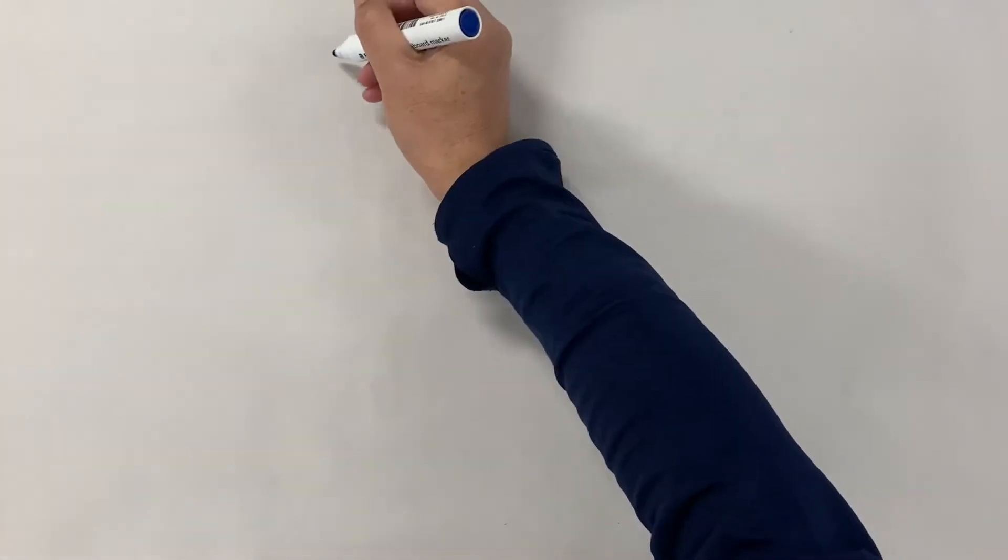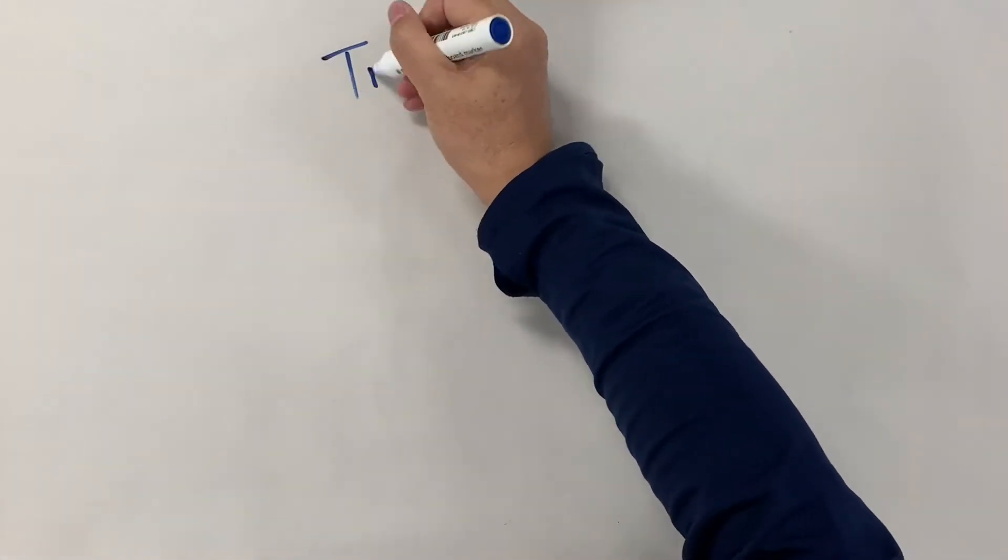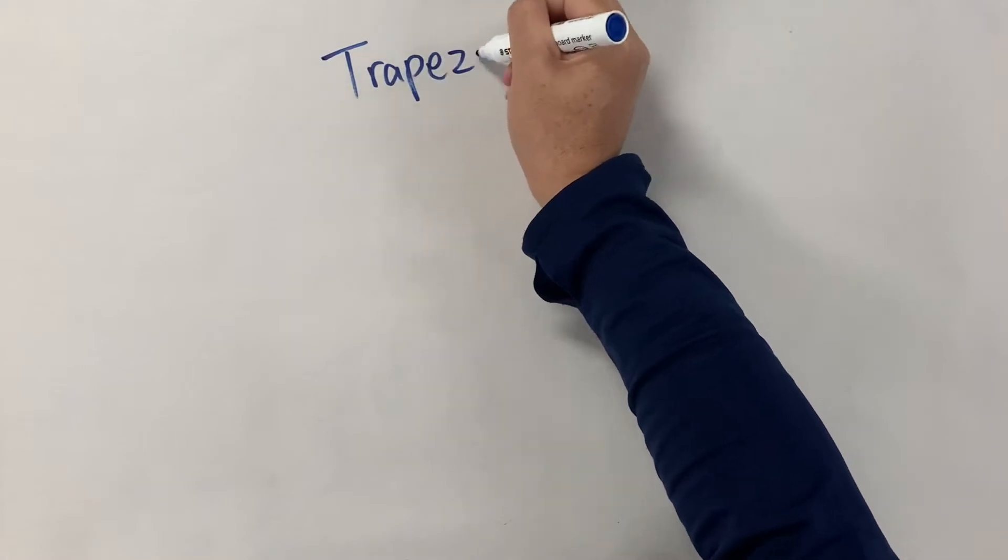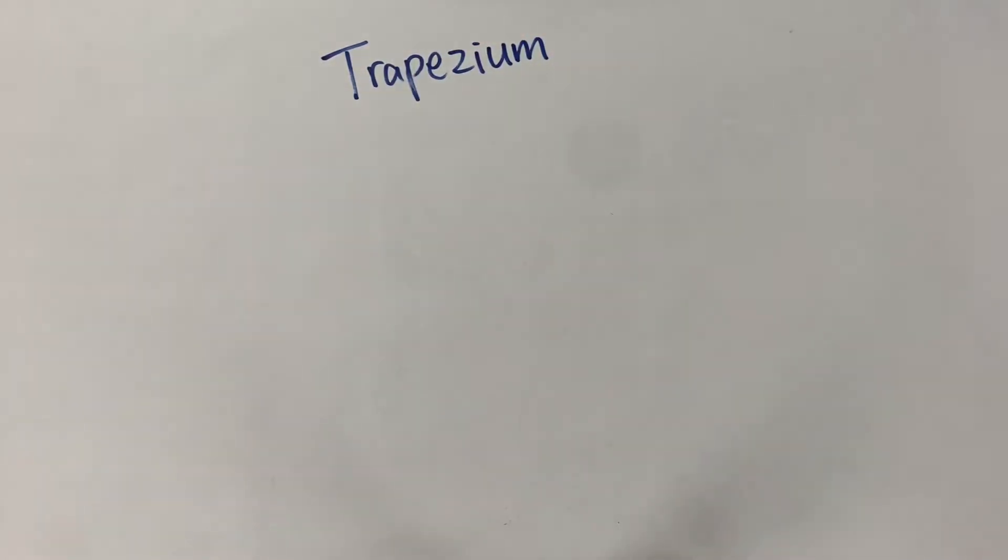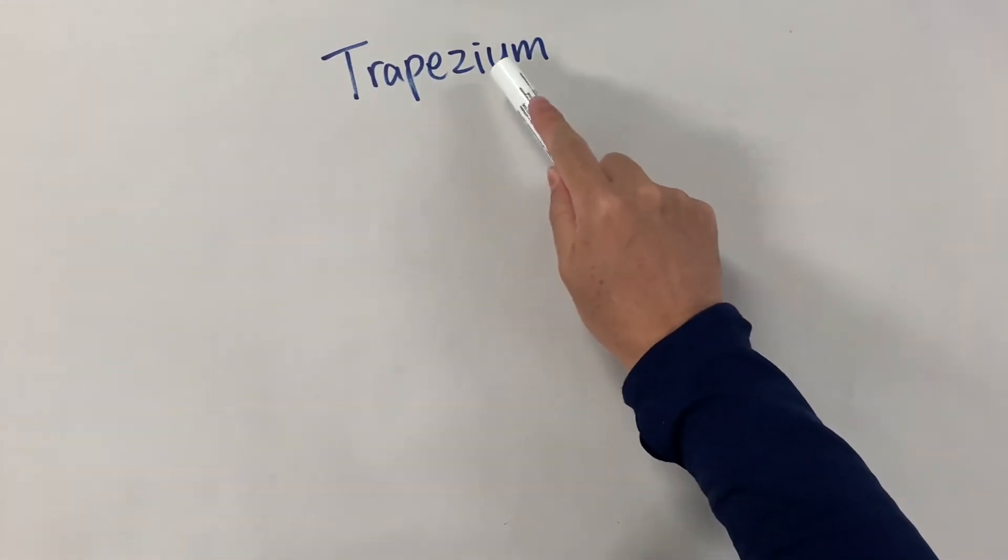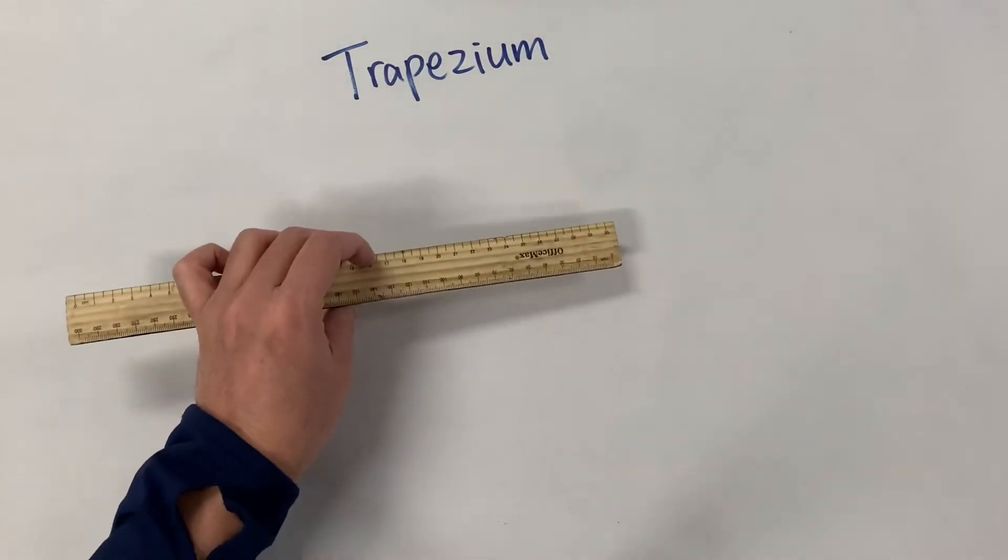So we're going to draw trapeziums today. Now I know some countries call this trapezoid, but in Australia we call it trapezium.